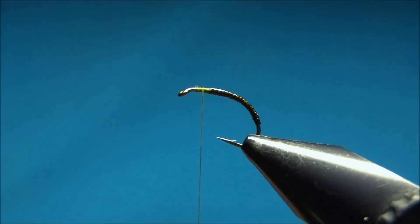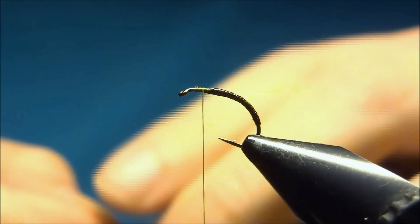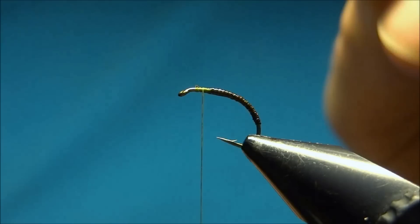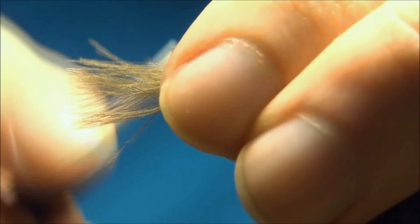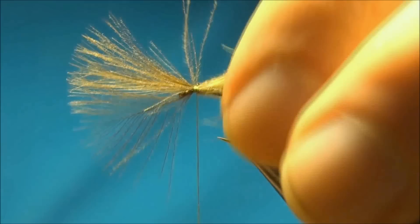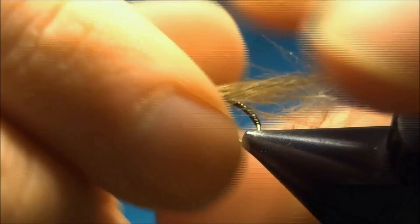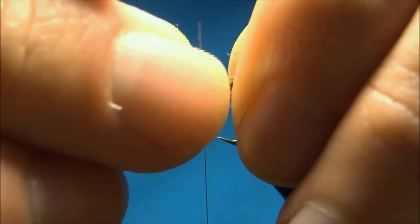Now wait for it to dry before you tie in the next material. We're going to tie in the wings or the wing buds. These are made of natural grey CDC. I've selected two feathers and aligned the tips. Now we're going to tie it in facing forward over the eye, then just pull back till it has the right length. Length should be about the length of the body.